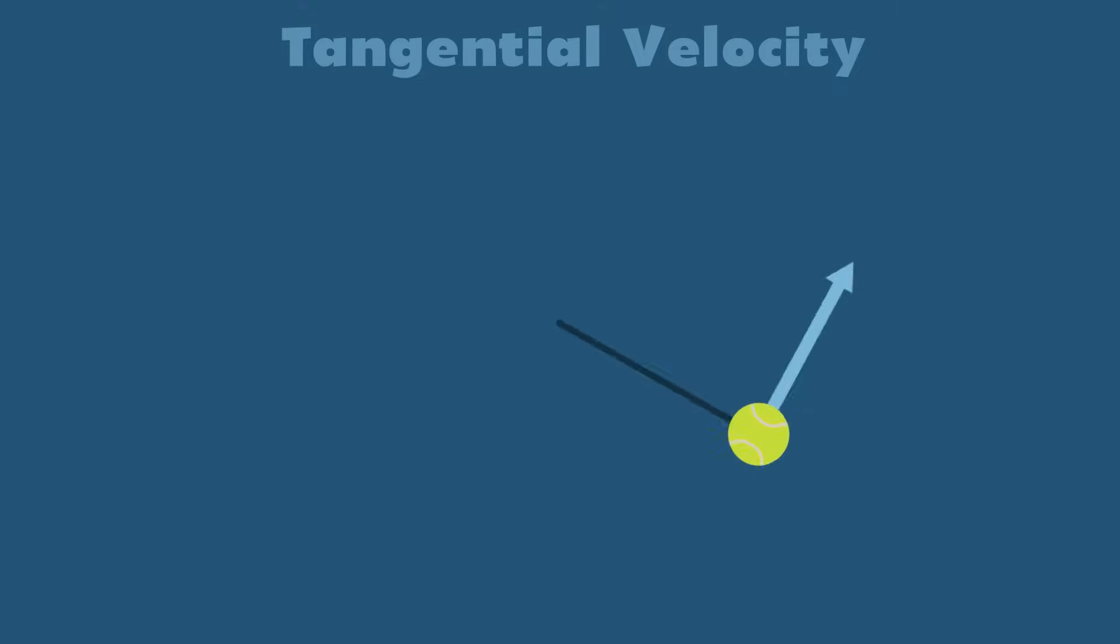But assuming you don't cut the string and you keep swinging the ball, the ball's tangential velocity is constantly changing directions. This means the ball is accelerating, and the reason it's accelerating is due to the centripetal force. The centripetal force acting on the ball is constantly directing the ball towards the center of the circle, your hand.